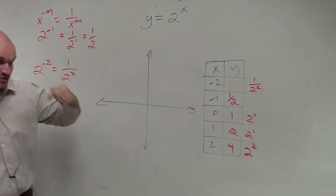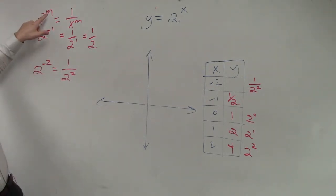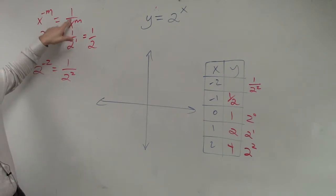So the rules of exponents, which we've already covered, state that x to the negative power, to get rid of that being a negative exponent, you have to put it in the reciprocal. So see how this is in the numerator? To make it positive, you put it in the denominator.